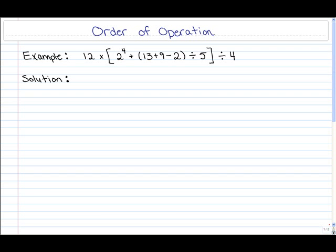Now the most common acronym that's used to help us remember the order of operation is the word BEDMAS, where the B refers to brackets, the E refers to exponents, D division, M multiplication, A addition, and S subtraction.